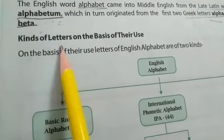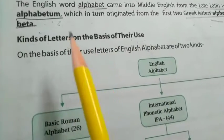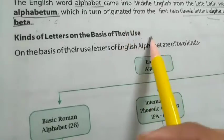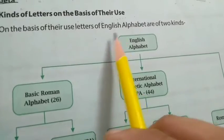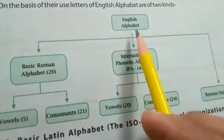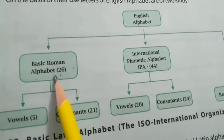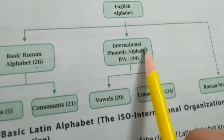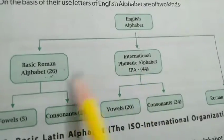Now let's see the kinds of letters on the basis of their use. On the basis of their use, letters of the English alphabet are of two kinds. First is the basic Roman alphabet, which are 26 in number. Then we have the international phonetic alphabet. These are the two basic kinds, along with Roman numerals.